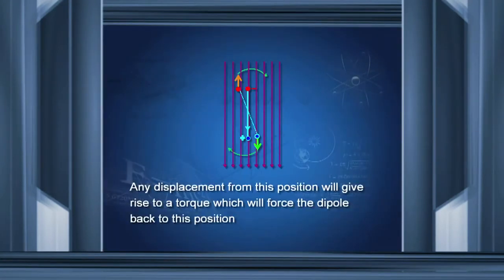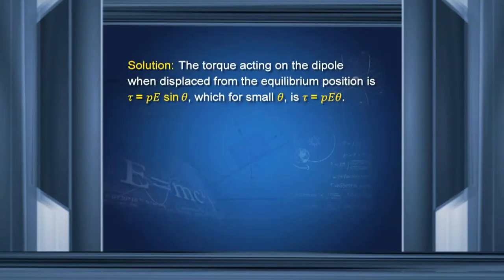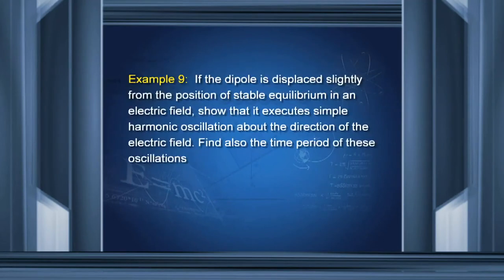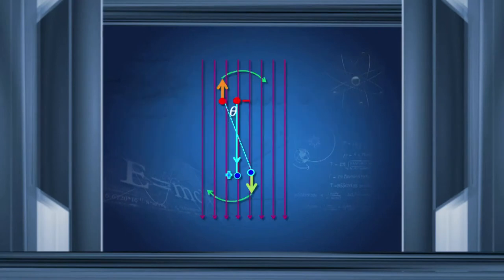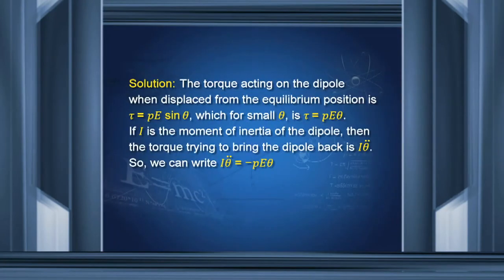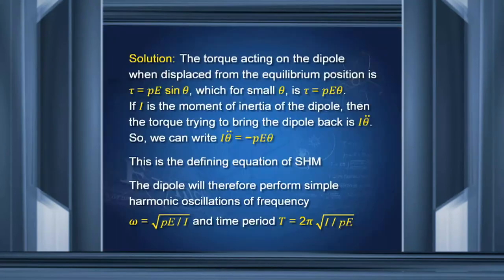Does the dipole perform simple harmonic motion when displaced slightly from the stable equilibrium position? The torque is pE sinθ ≈ pEθ for small θ. If I is the moment of inertia, the restoring torque gives I(d²θ/dt²) = −pEθ. The angular acceleration is proportional to angular displacement — the signature of simple harmonic motion. The time period is T = 2π√(I/pE).